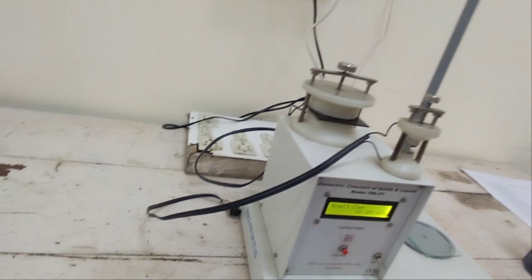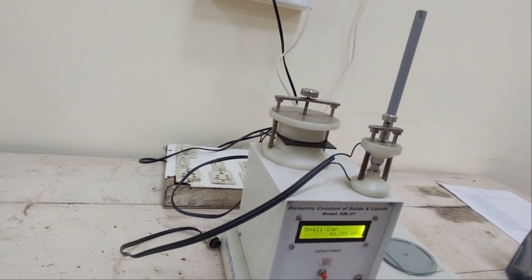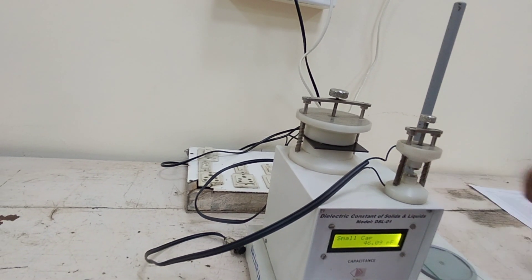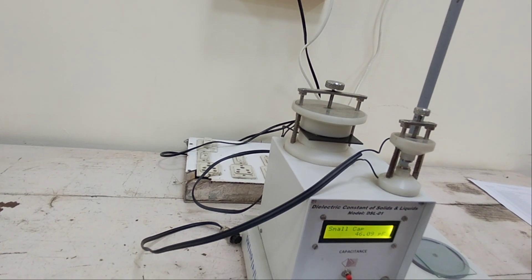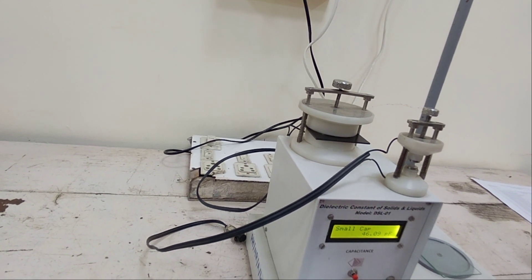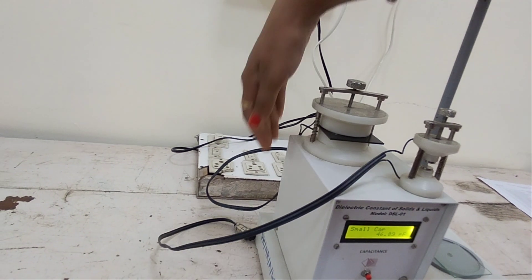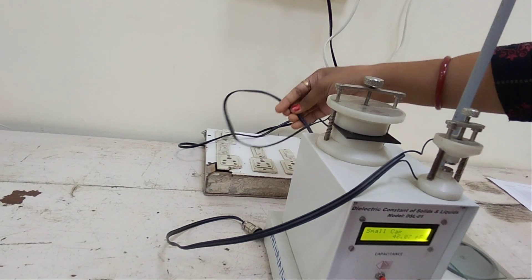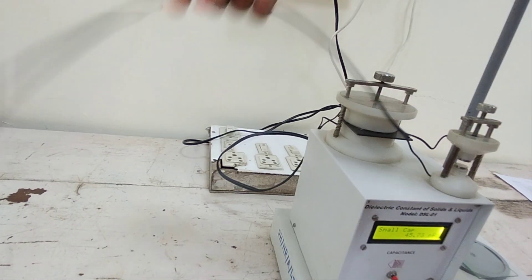Now next we have to measure the capacitance value for small size crystals or small size materials like barium titanate and lead zirconate. So we have to change our connection and insert the next knob here.